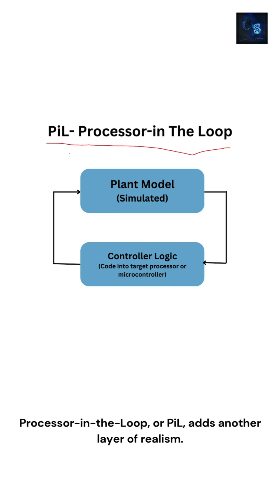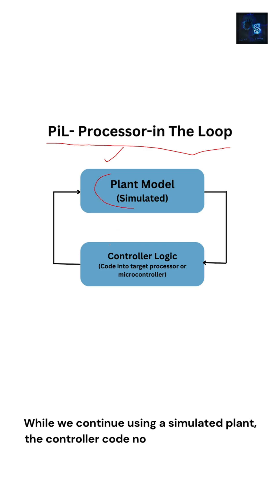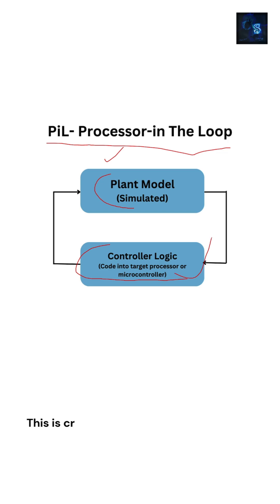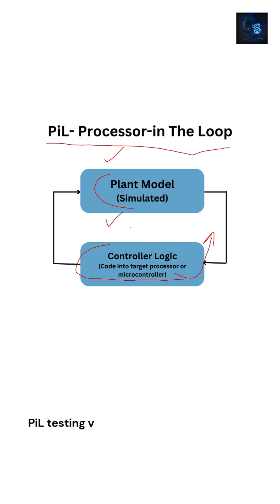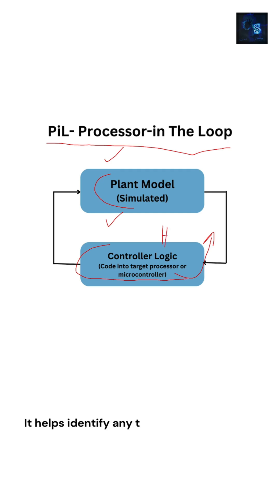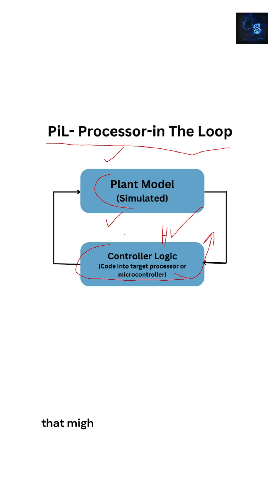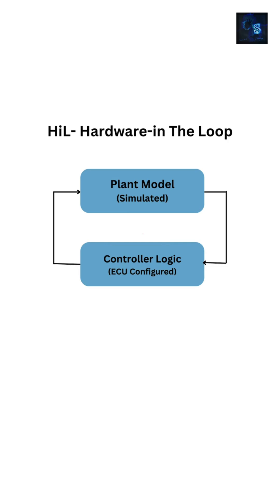Processor in the Loop, or PIL, adds another layer of realism. While we continue using a simulated plant, the controller code now runs on the target processor or microcontroller. This is crucial for evaluating the real-time performance and execution characteristics of your code. PIL testing verifies that the hardware can handle the computational demands of your software. It helps identify any timing issues, latency, or performance bottlenecks that might occur once the system is deployed in a real-world scenario.